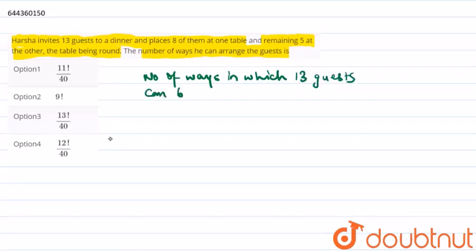can be divided into groups. That is 13C8 equals 13 factorial upon 8 factorial into 5 factorial.